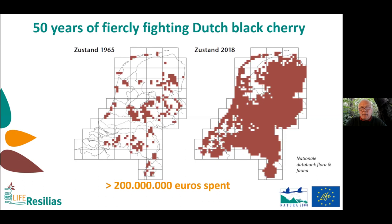In the beginning, in the 1960s, we thought we had made a mistake introducing this tree species and we were going to get rid of it. In the Netherlands, there were very large governmental programs subsidizing everybody who was fighting it. It was very coordinated, and you can see the result after 200 million euros spent. This brought us to the conclusion that we won't get rid of this tree species anymore, so we started studying what to do with it.